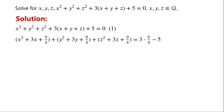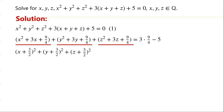x squared plus three x plus nine over four equals (x plus three over two) all squared. y squared plus three y plus nine over four equals (y plus three over two) all squared. z squared plus three z plus nine over four equals (z plus three over two) all squared. And three times nine over four minus five equals seven over four.